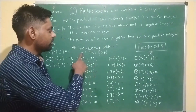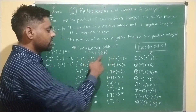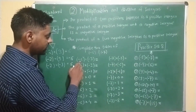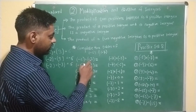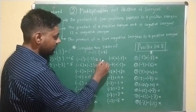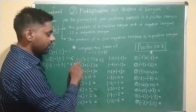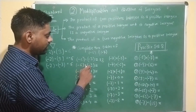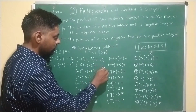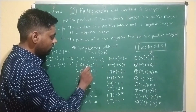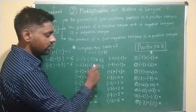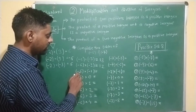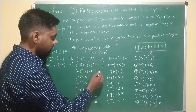Here we complete the table of minus 6 and minus 7. First, minus 6 multiplied by minus 3 becomes plus 18. By rule 3, minus 6 multiplied by minus 2 gives plus 12. The product of 2 negative integers is always a positive integer by rule 3. Next, minus 6 multiplied by minus 1.